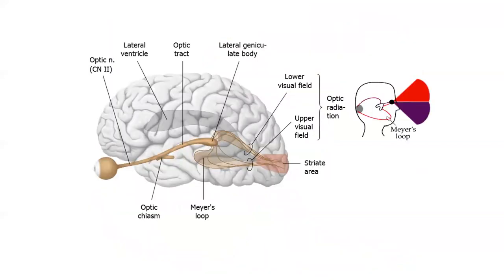Here's a lateral view of the very same thing. We can see the lateral ventricle and how Meyer's loop — the lower bundle responsible for upper visual field — is swinging out around the ventricle. From the eye all the way up to the lateral geniculate nucleus, it's all basically within a flat plane. But when you reach the LGN and the optic radiations exit posteriorly, that's when we see them diverge significantly, before converging again when they reach the occipital cortex, the primary visual center.